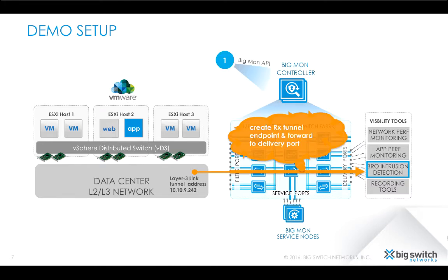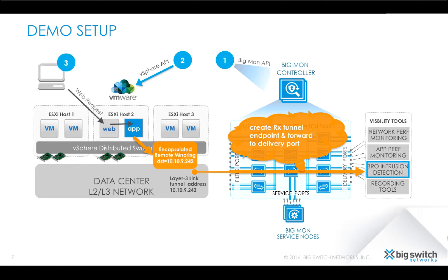We will go through the following workflow steps. In the first step, we will have the BigMon controller create a tunnel endpoint on the fabric and a policy to forward traffic from this endpoint to the IDS. Then, using the vSphere API, we create the remote mirroring session on VDS and select the app VM as the source. At this point, we will perform a test with an HTTP request to the web VM that gets proxied to the app backend. To verify the app VM traffic is delivered, we will take a look at the Bro IDS connection log.